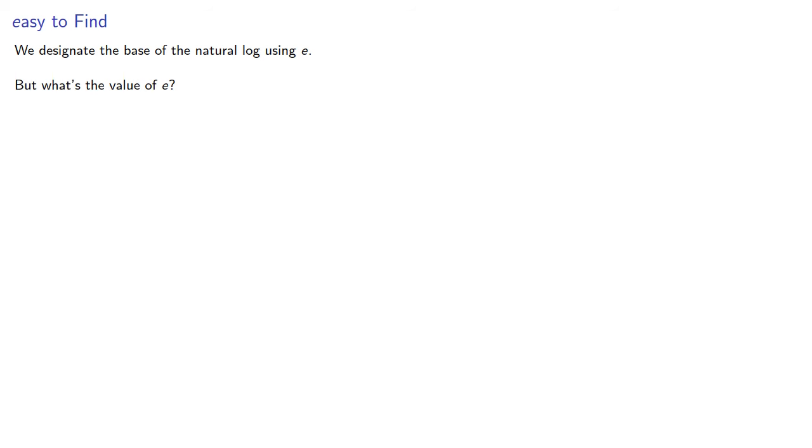Now we designate the base of the natural log using e. But what's the value of e? Since e is the base of our log function, we note that log of e is equal to 1. And so that gives us a way to find e as follows: from our area function being the limit, we want the area to be 1 for some value e.